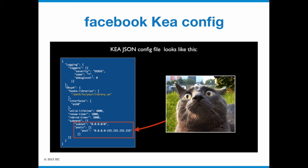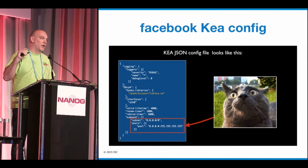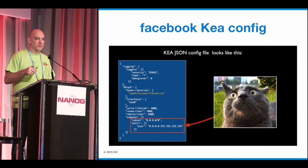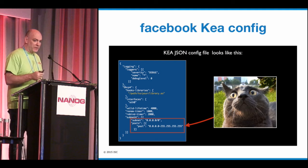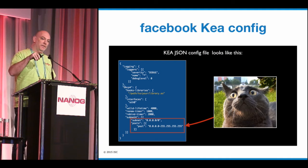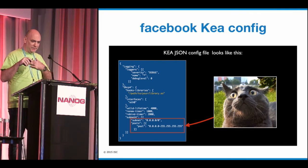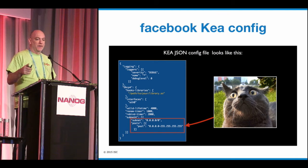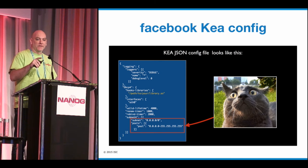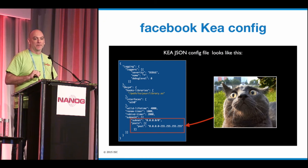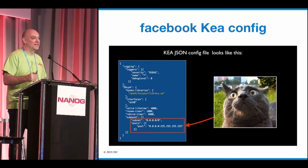Here's another nice thing that folks really like about Kea: the config file is in JSON. There's none of what you're used to with dhcpd.conf — it's in JSON format, so they're able to easily automate sending out config files to various servers. Here's a very basic one doing some logging, calling the hooks library, running on interface ETH0 with some lease time settings. Here's where the funniness starts for Facebook: does anyone know what they just did? They defined all of IPv4 — private and public — as a subnet. Awesome. This is the insanity that we love from you guys.